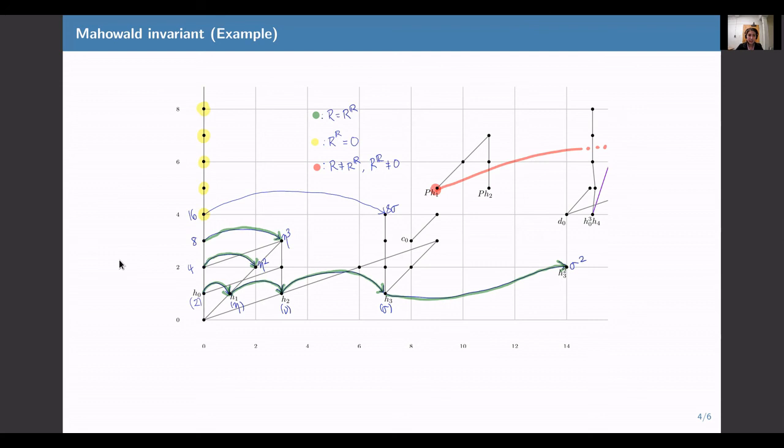Next, I've broken these classical Mahowald invariants down into the ones that agree with the R-motivic Mahowald invariant. Those are the ones marked in green. And the ones where the R-motivic Mahowald invariant is zero, even though the classical one is never zero.